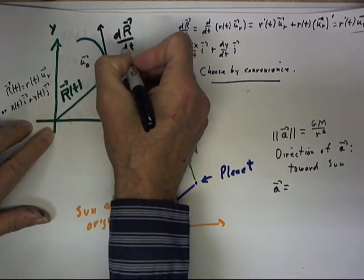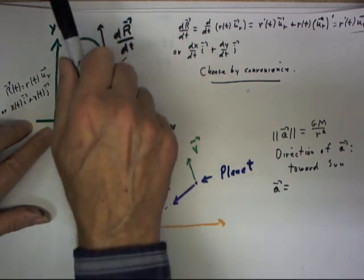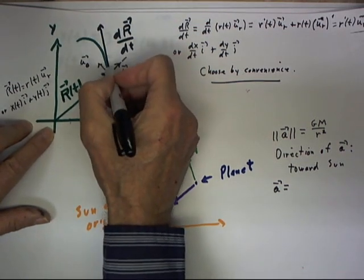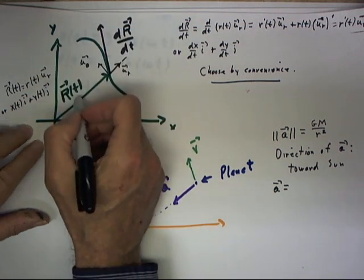The derivative of r with respect to t is a vector tangent to the curve. If t is interpreted as time, the magnitude of this vector is going to be the velocity.